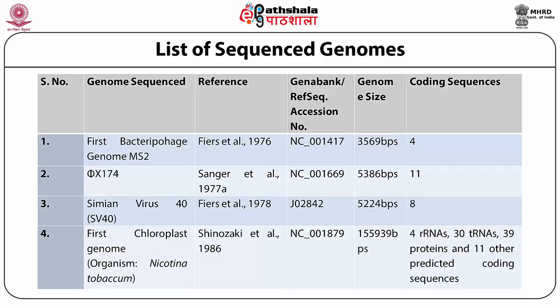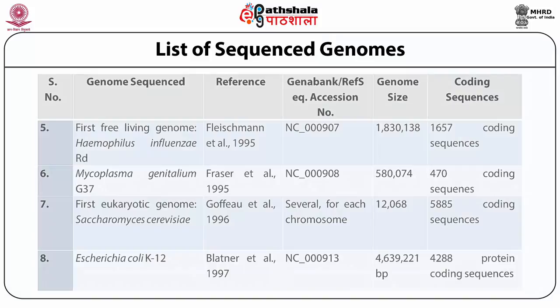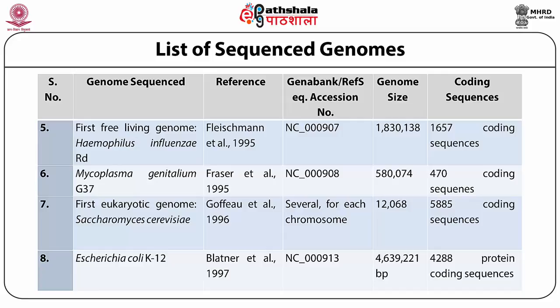The simian virus 40 was sequenced again by Fiers et al. in 1978, which had a genome size of 5224 base pairs with 8 coding sequences. The first eukaryotic portion of the genome to be sequenced was a chloroplast genome belonging to Nicotiana tabacum. The chloroplast genome contained genes coding for 4 rRNAs, 30 tRNAs, 39 proteins, and 11 other predicted sequences. The first free-living genome to be sequenced was Haemophilus influenzae by Fleischmann et al. in 1995, which had 1657 coding sequences.